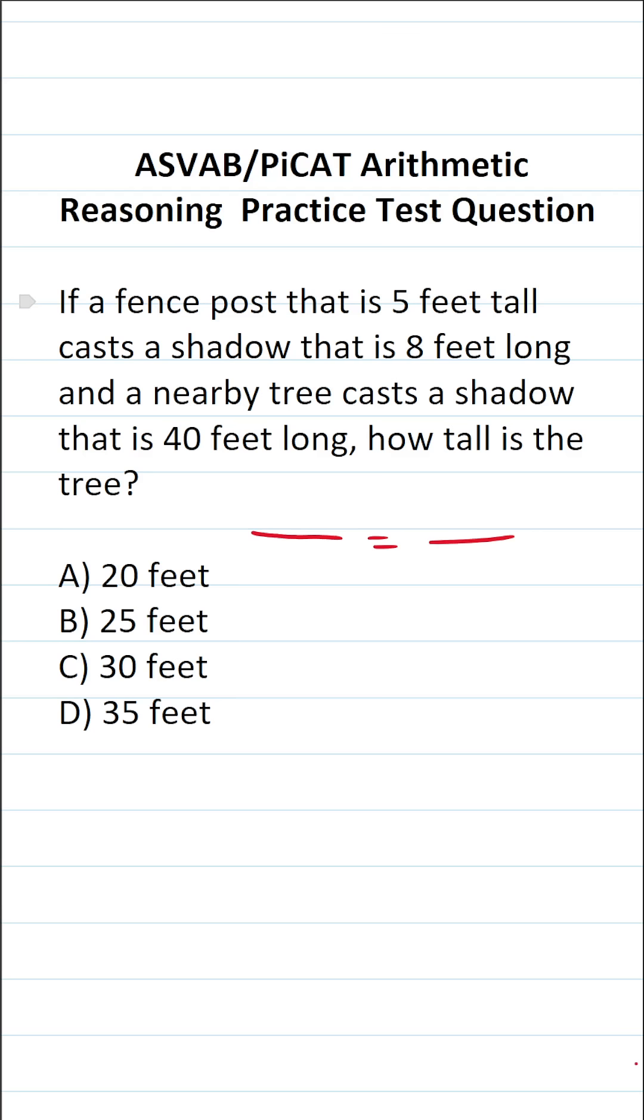On the left-hand side of the equal sign, I'm going to fill the proportion in with information I know, notably a 5-foot tall fence post casts a shadow that is 8 feet long. So as you can see, I have the height of the object in the numerator over the length of the object's shadow in the denominator.